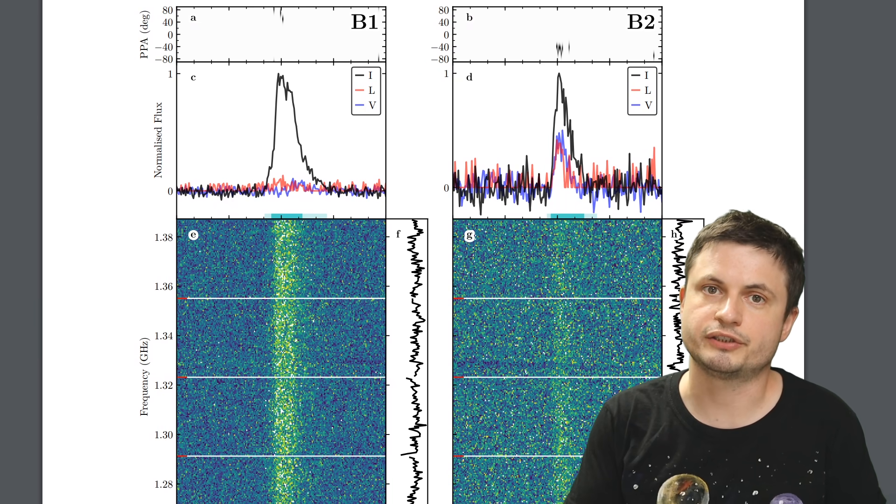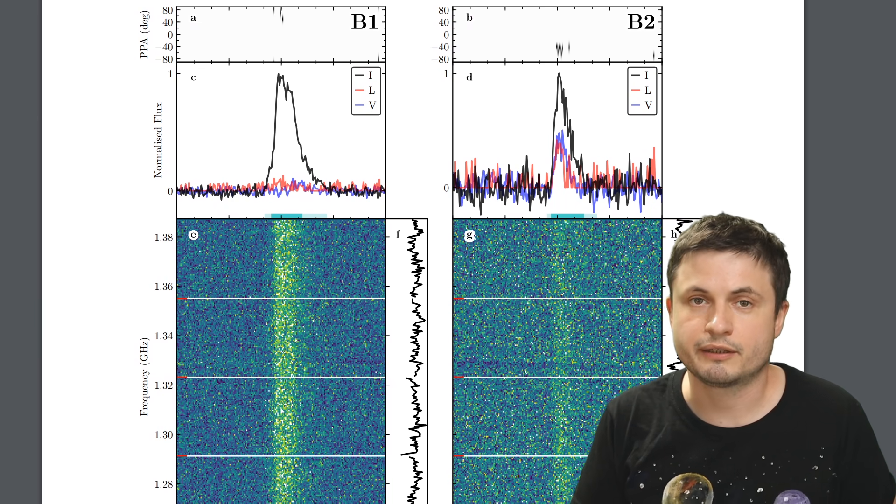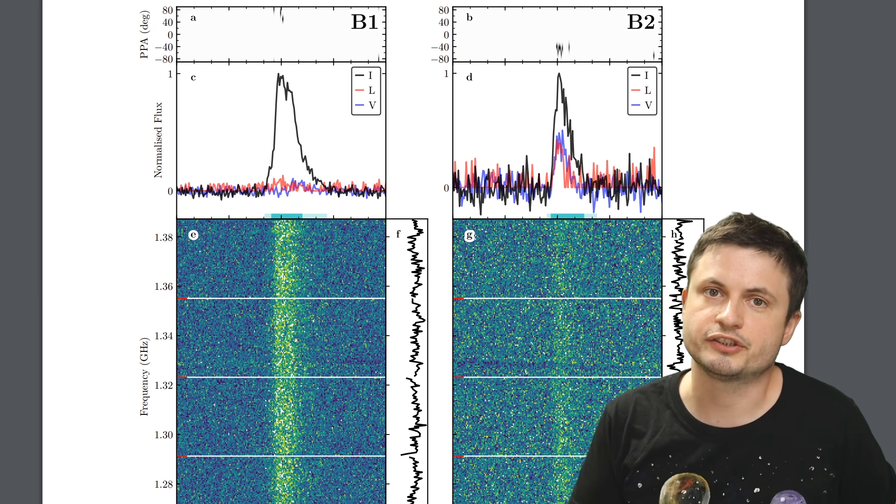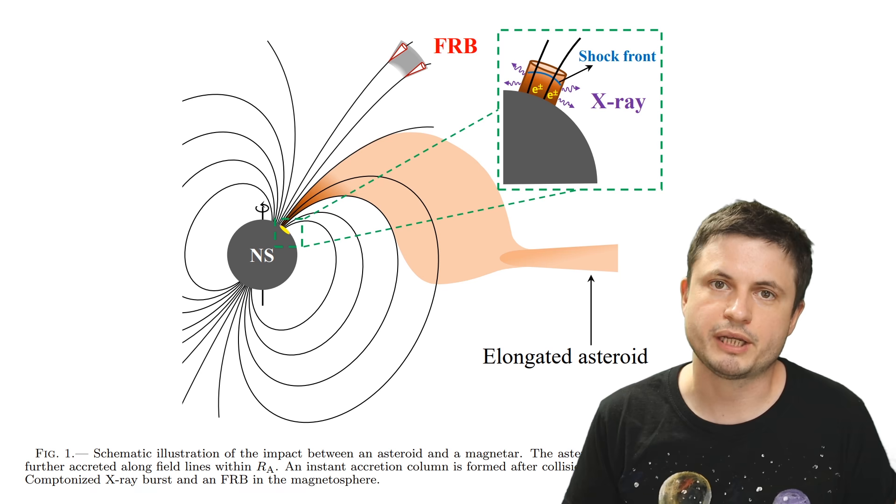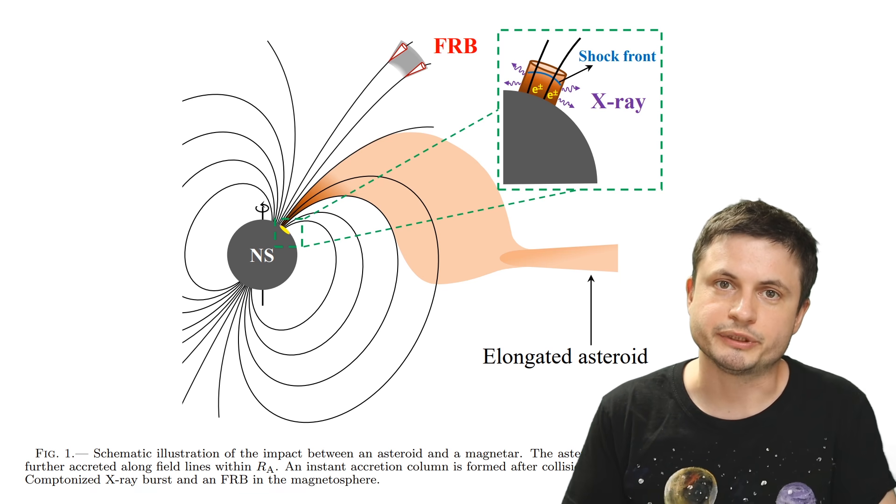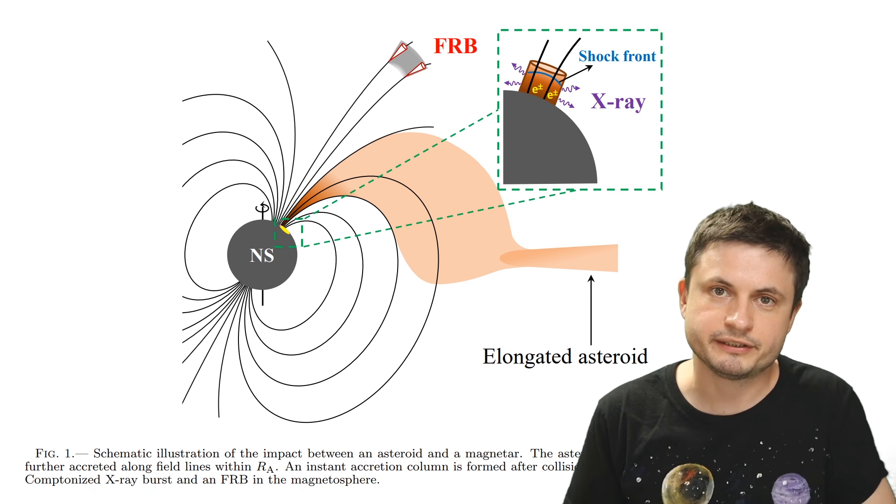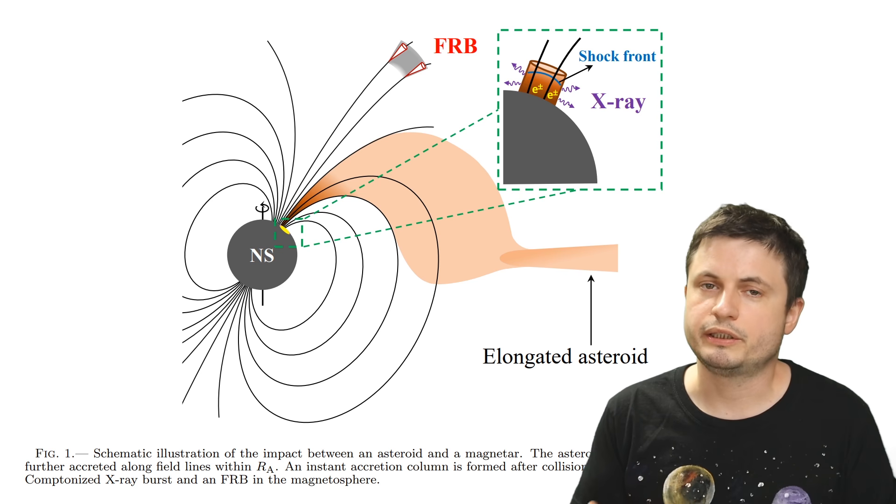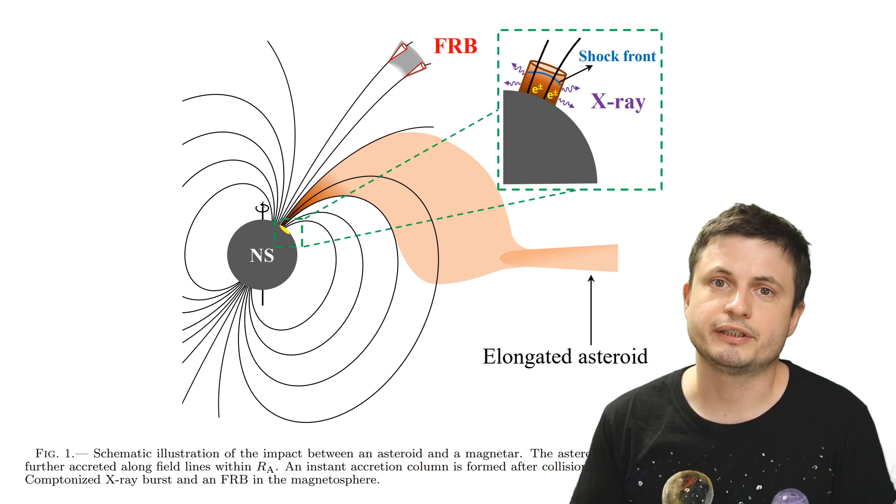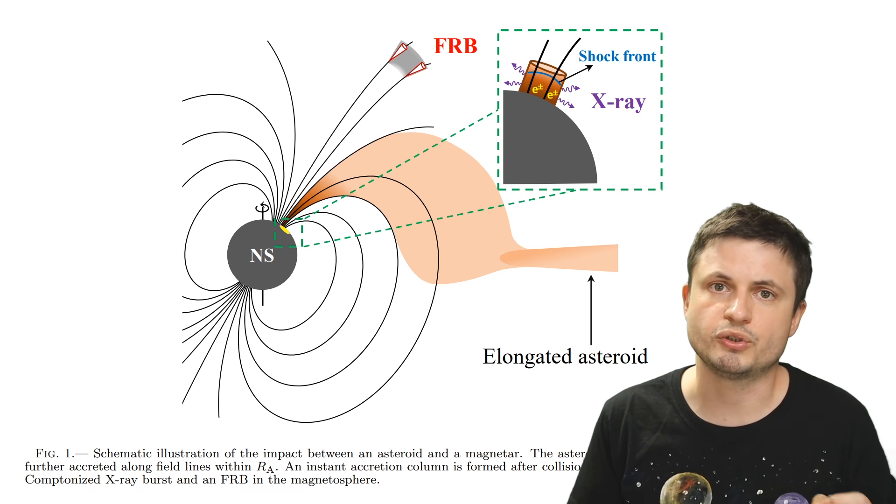And interestingly, the recent observations from October of 2020 are very similar to the original observations back in April, which as predicted in the paper from back in May of 2020, can be actually explained by an asteroid that was spaghettified in such a way that the difference between the initial and the last impact would be roughly around 1.4 seconds, with additional weaker impacts then causing the weaker FRBs we observed a few weeks later.